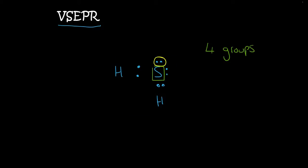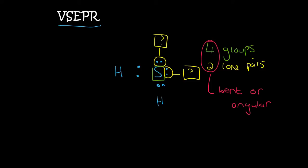So there's a lone pair. Why? Because there's no bond over here. And then there's a lone pair. Why? Because there's no bond over here. So we've got four groups with two lone pairs. Now if you watched the previous lesson and you know that table you'll know that a 4, 2 combination is going to be called bent or angular.